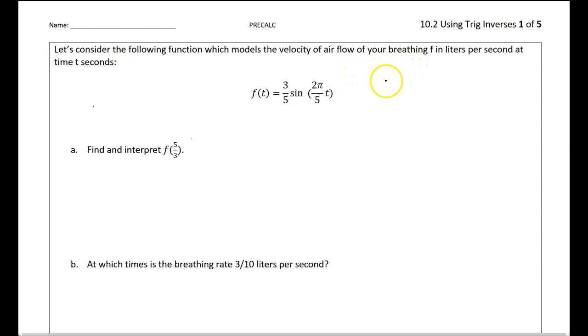So we've studied this before, this is how fast you breathe in and out. It makes sense to model that using a trig function, since it is a cyclical phenomenon. So here we're just plugging in, so this would be equal to whatever we get when we plug in 5 over 3 for t. So 3 fifths sine of 2 pi over 5 times 5 over 3. There's going to be a lot of algebra in this particular lesson, so it's good to find little tricks like this. 5 over 5 is 1, so we can cancel that out right away. So we get sine of 2 pi over 3.